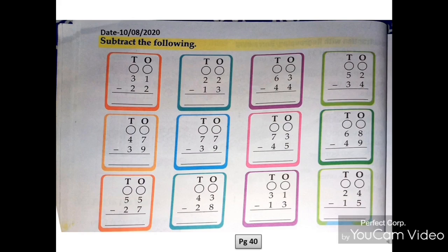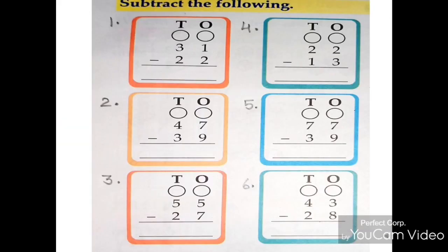So open your book, put today's date. Read the question, subtract the following. In today's class we will do first two columns that is from question number 1 to 6.